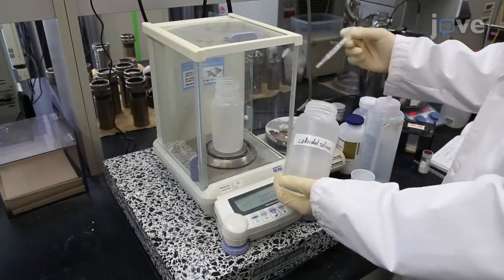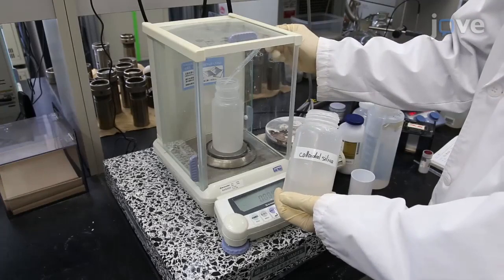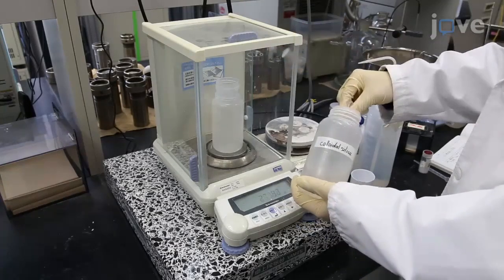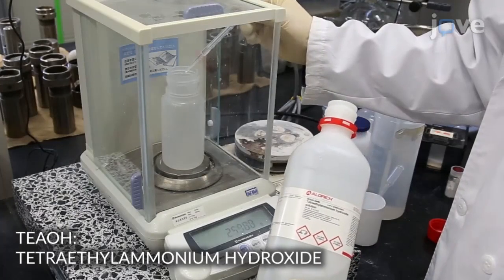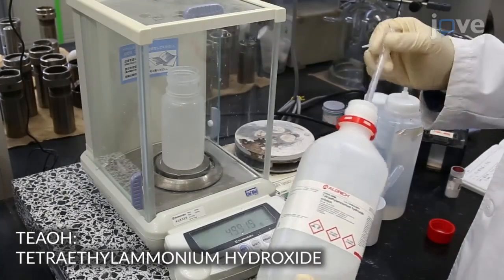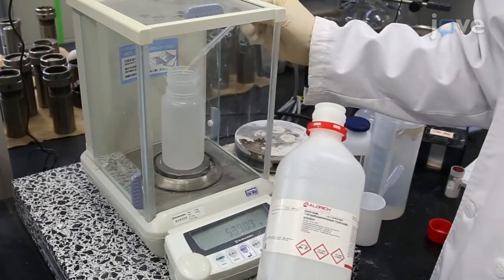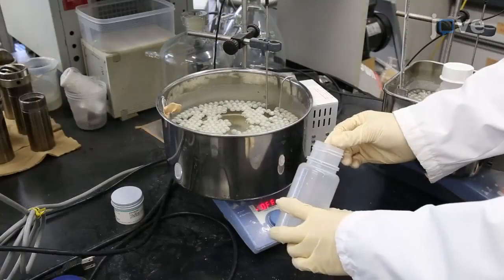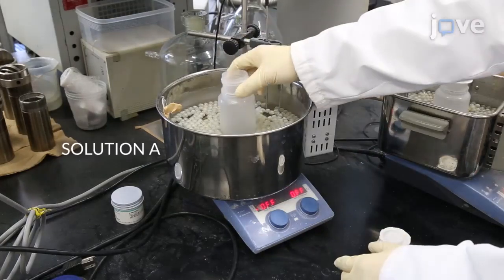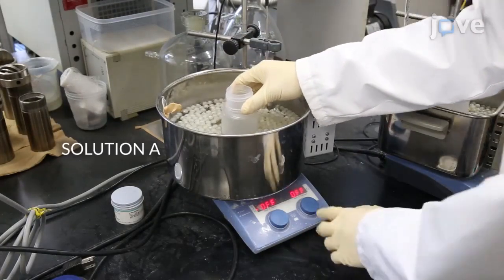First, add 26.2 grams of colloidal silica and 8.39 grams of tetraethyl ammonium hydroxide into a 250 milliliter bottle made of polypropylene. Stir the mixture using a magnetic stirrer for 20 minutes in a 50 degrees Celsius water bath.